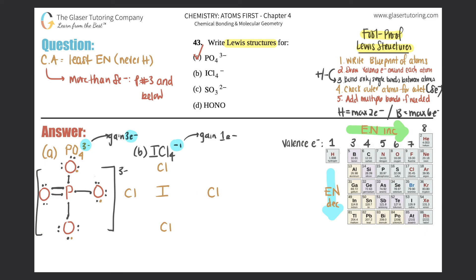Drawing seven electrons around each chlorine: one through seven for each of the four chlorines, and then seven around the central iodine as well.